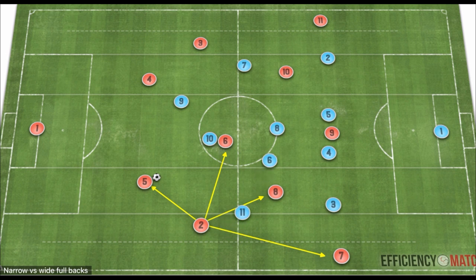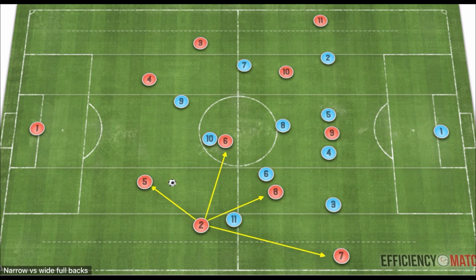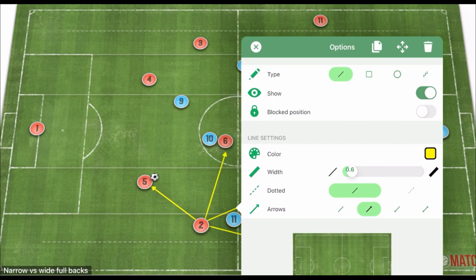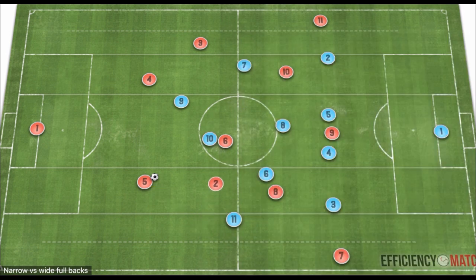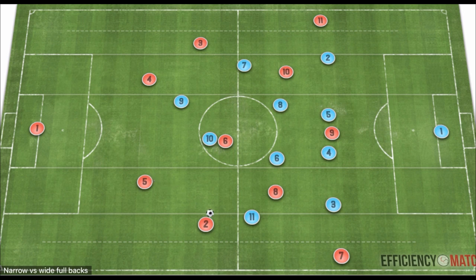The narrow fullback also forces the defense to defend across a more narrow shape, narrowing the press and defensive action from the opposing team, making it easier to play out and potentially progress higher up the field into the midfield third. This also puts the fullback in a better position to transition, placing him closer to the middle of the field where he can prevent outlets from becoming free if possession is lost. Additionally, positioning just five yards further inward creates a more goal-oriented approach, allowing the player to receive the ball facing more of the field with a better field of view.